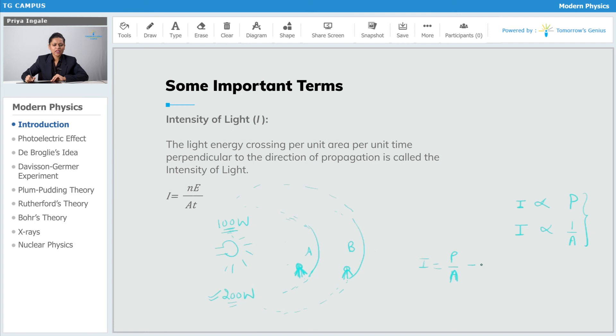Now, I know that power is work done per unit time, and that work done is nothing but energy. So, I can write power as total energy divided by area times time.